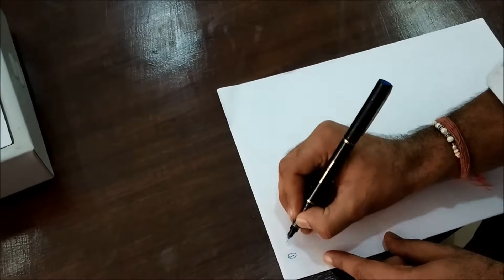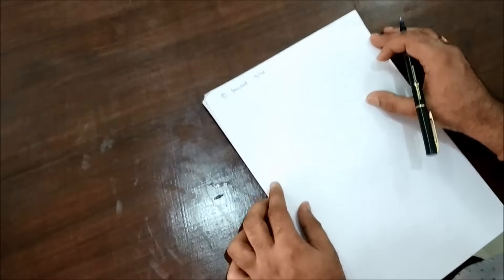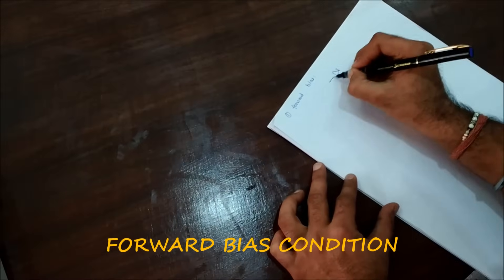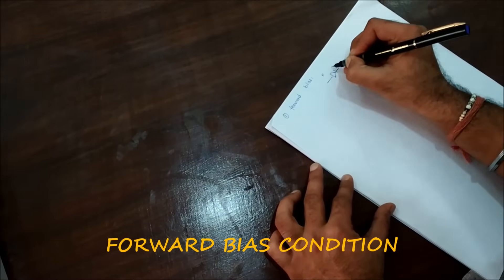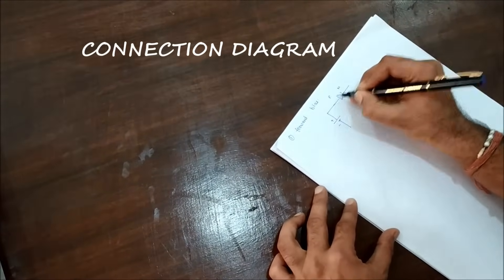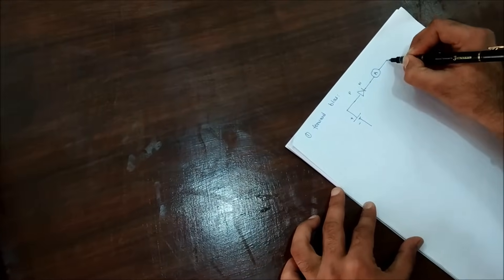Forward bias PN junction diode. This is our diode and what we will do - we know it is a P side and an N side. So we will apply a voltage source having the positive side to the P side. After that we will put an ammeter to measure our current.